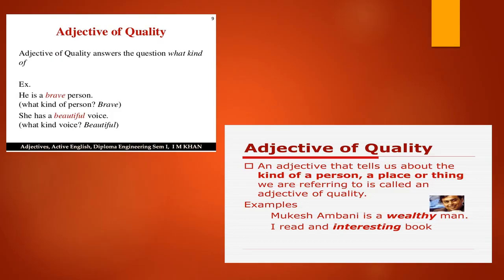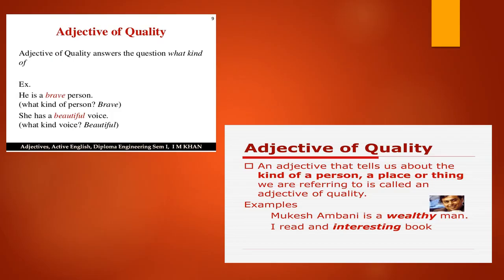Take some other examples. Suresh is an expert driver. This is an excellent book. China is a large country. Lata is a thin girl. In these sentences, expert, excellent, large and thin are adjectives of quality. They describe qualities of a person or things. Adjectives of quality answer the question 'what kind' and tell us what kind of person or thing is meant.